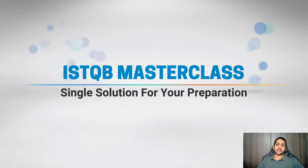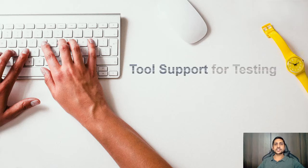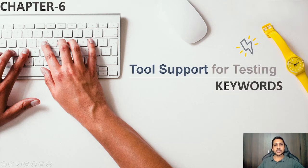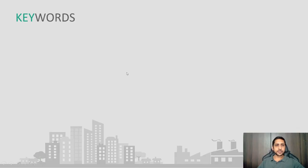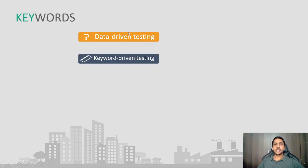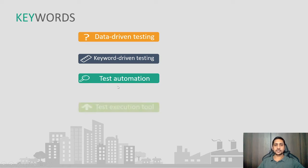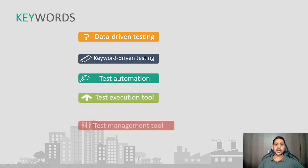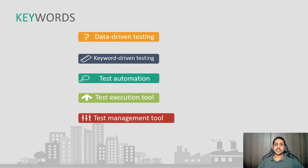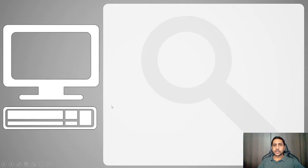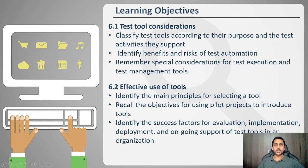Hello and welcome to ISTQB masterclass. In this lecture we are going to start with chapter number six, that is tool support for testing. Let's go through the keywords which are important for this chapter. The first keyword is data driven testing, then keyword driven testing, next is test automation, and finally test execution tool and test management tool.